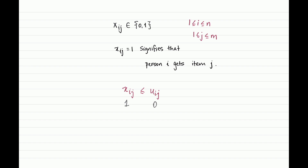On top of that, you could write constraints modeling our objectives. For instance, you might say x_ij is at most u_ij — this ensures that if x_ij equals 1 (person i gets item j), then u_ij cannot be 0, because that would violate the constraint. So this constraint ensures the allocation is non-wasteful. Similarly, you could write another constraint to ensure there is no envy. In terms of semantics this formulation works, but can you spot something problematic?